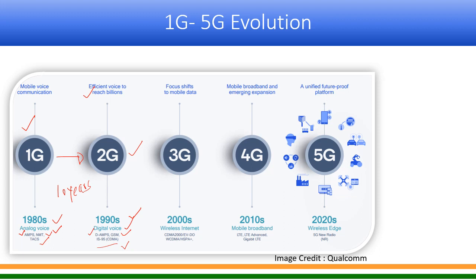From 2G to 3G, evolution also took almost 10 years. From 1990 to 2000, 3G came, offering some sort of wireless internet. Although we had some kind of data during 2G which we called 2.5G, the wireless internet came during the 3G era around year 2000. The focus shifted to mobile data. The technologies which were successful were CDMA 2000, EVDO, WCDMA, which then evolved to HSPA and HSPA+. The successful technology was WCDMA and its evolution to HSPA — we call it the 3GPP family of technology.